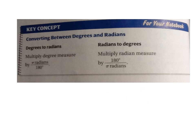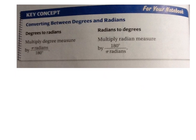Now at the bottom of page 860, this is the part where radians confuse students. It's really not that hard once you get the hang of it. Degrees to radians: you should know that 180 degrees is the same thing as pi. If you're going from degrees to radians, you multiply by pi over 180. If you're going from radians to degrees, you multiply by 180 over pi.